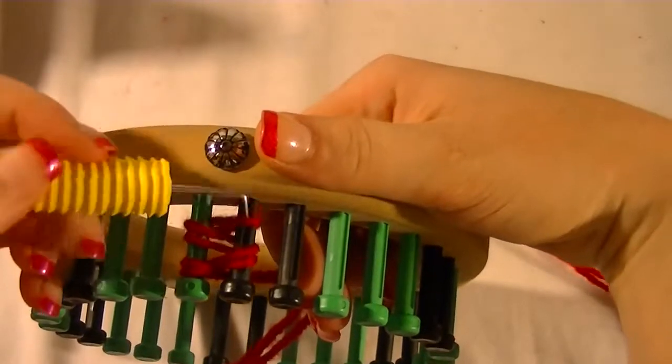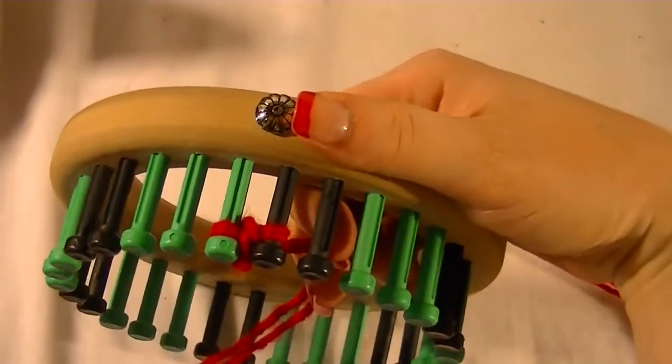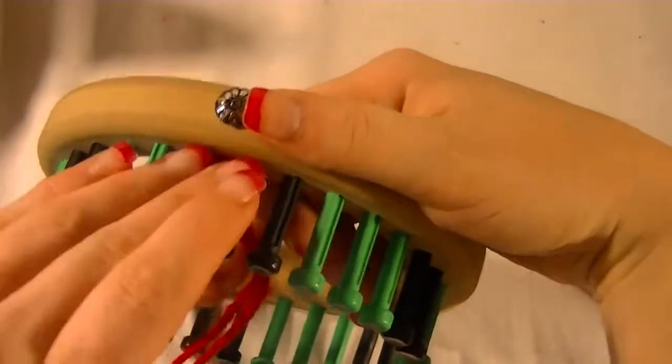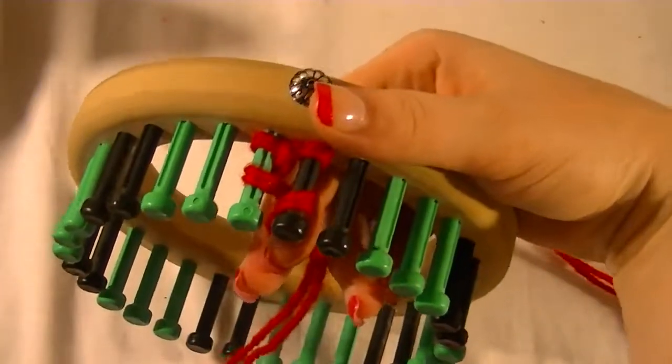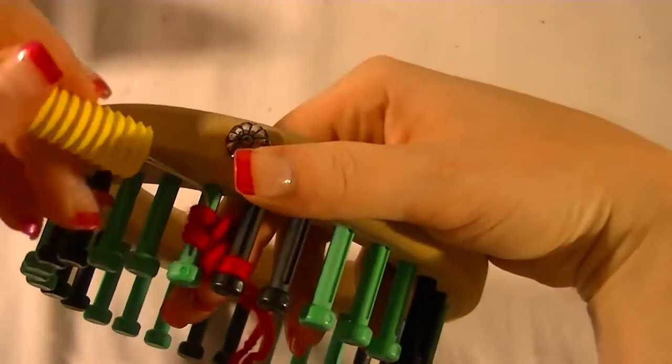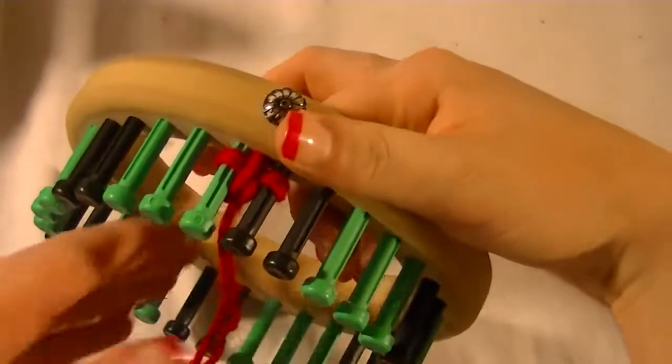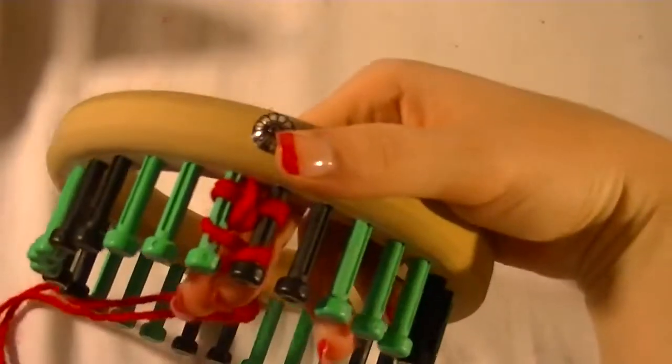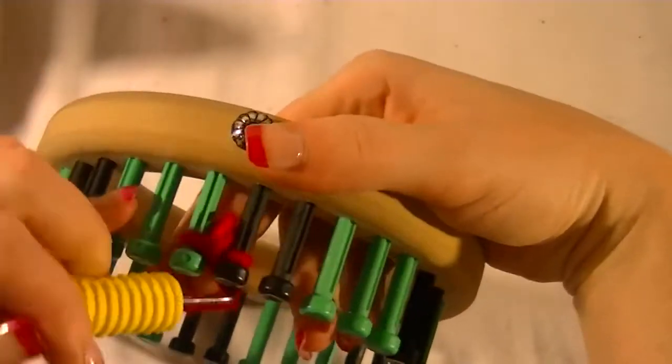And then you'll take those bottom loops over the top loops, push it down. You will wrap it again like a figure eight. Take the bottom ones over the top. You want to make sure you get both strands and push it down. And you just keep doing this until it gets to the length that you would like for it to be.